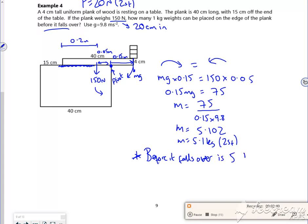So before it falls over is 5.1 kilo weights, there you go. But that really really messed with people's heads, that one. But it's this idea of it just tipping, so there is no contact there—there's no contact along all of it along the bottom there.